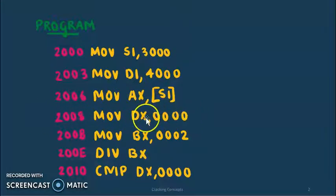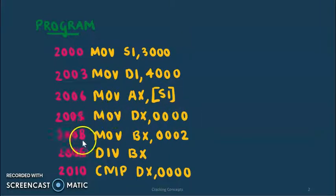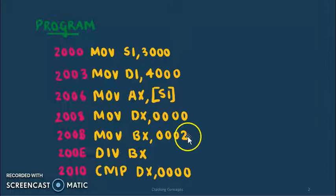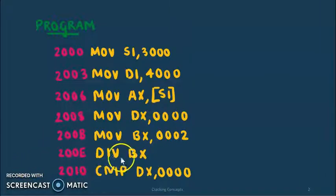Here we'll move the value 0 to the register DX. This is a 3-byte instruction so the next line of code is at 200B. Here we'll move the value 2 to the register BX. This is a 3-byte instruction so the next line of code is at 200E, where we'll divide AX by BX.